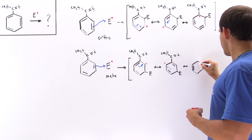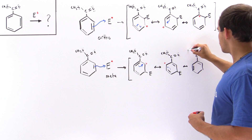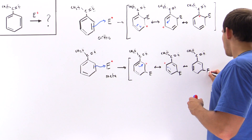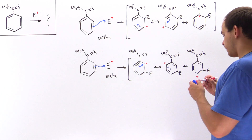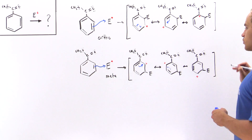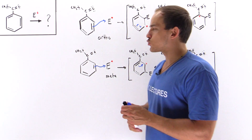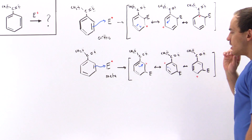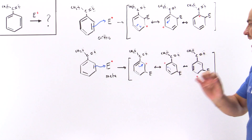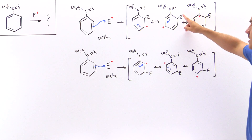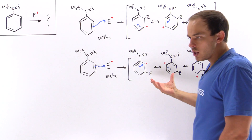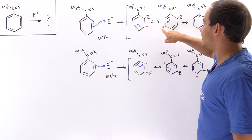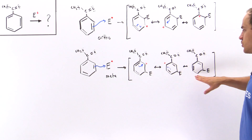Which resonance structure is more stable, and why? The more stable one will produce the predominating product. From the look of it, we have three resonance structures for the meta case and three for the ortho case. The difference is: in the ortho case, the positive charge ends up on the tertiary carbon adjacent to the substituent, whereas in the meta case, it never does. A tertiary carbocation is more stable than a secondary carbocation.